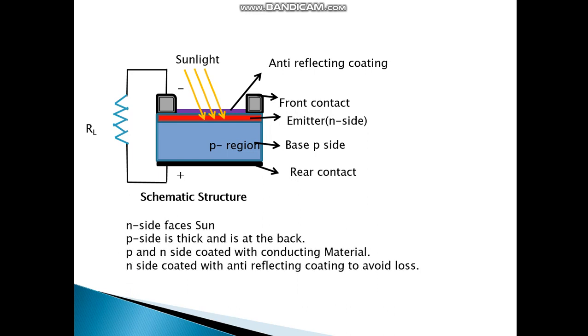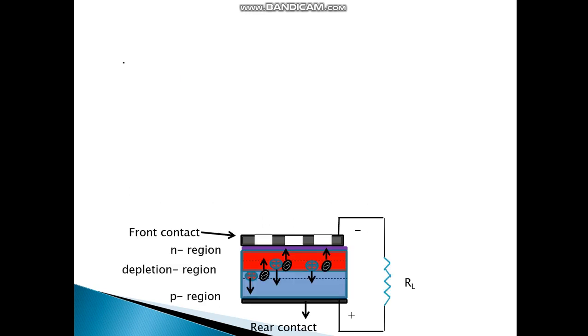That's the schematic structure: n side faces sun, p side is thick and is at the back, p and n side coated with conducting material, n side coated with anti-reflecting coating to avoid loss. Again we have the structure here.